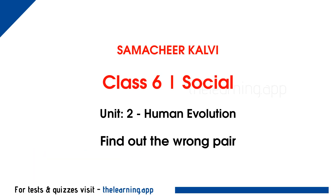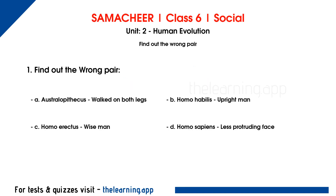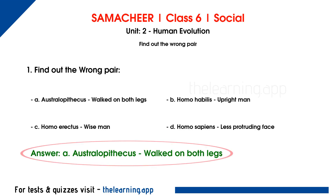Next, find out the wrong pair. Options: A — Australopithecus walked on both legs; B — Homo habilis, upright man; C — Homo erectus, wise man; D — Homo sapiens, less protruding face. Correct answer is option A — Australopithecus walked on both legs. That is the wrong pair.